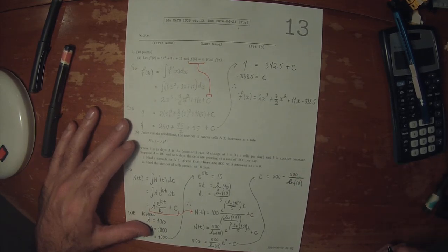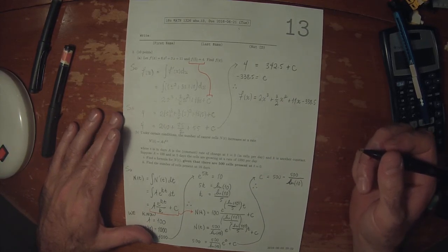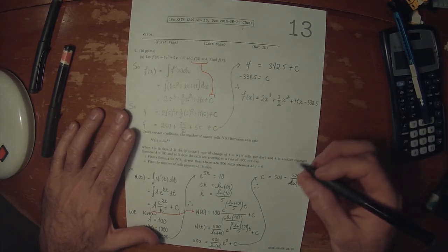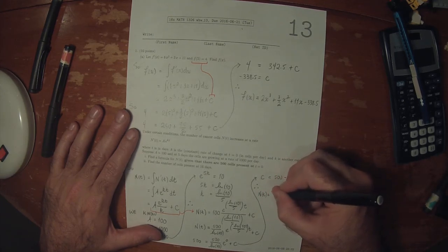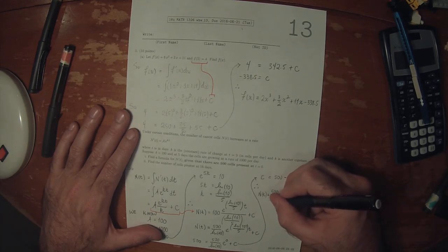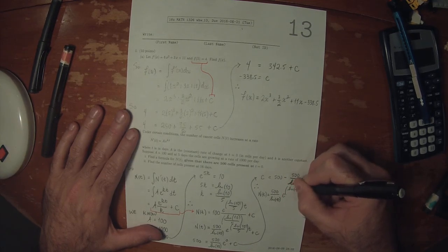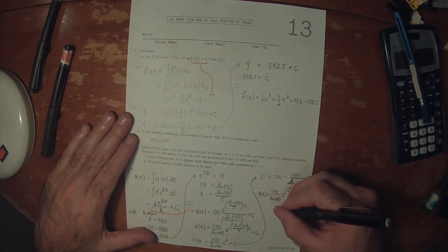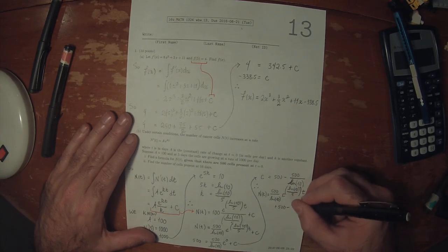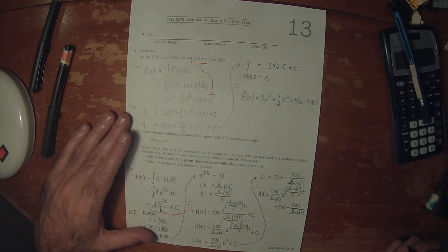So that means n of t can be written as 500 over log 10, exponential log 10 over 5 t, plus 500 minus 500 over log 10. And that's the answer to the exercise.